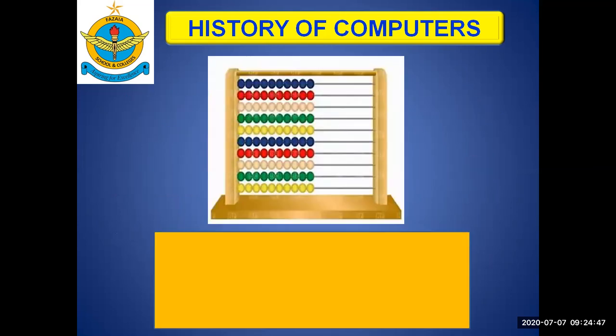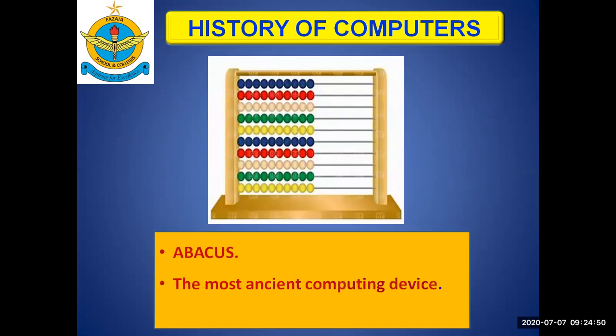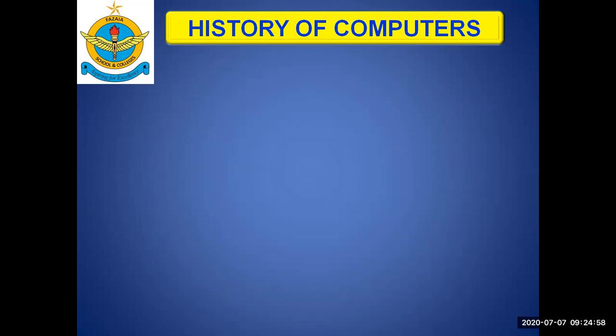First on the timeline is the abacus, and it is the most ancient computing device. It is considered the first computing device ever and it was developed and used by the Chinese.